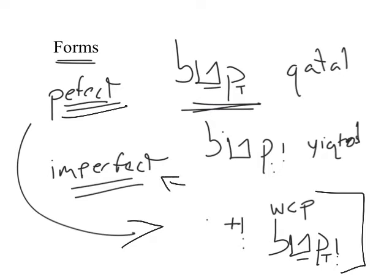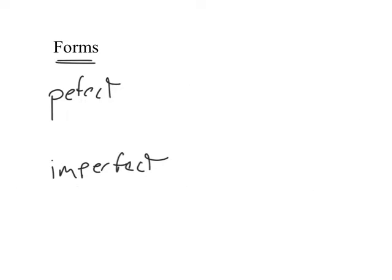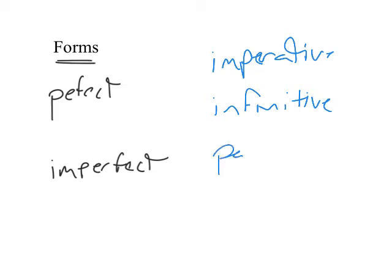There's something similar that goes on with the imperfect, but we'll talk about that later. And besides the two main forms, perfect and imperfect, there's also the imperative form, the infinitive form, and the participle form.